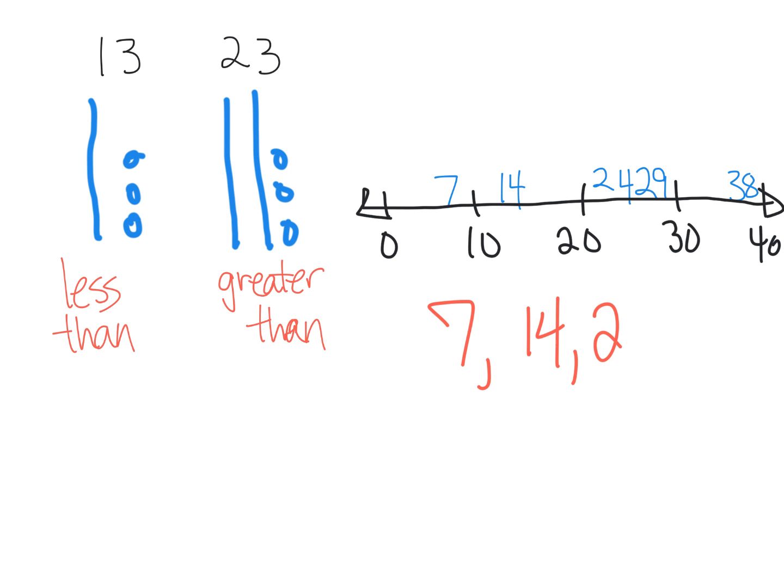But it's less than 29 because 29 is 2 tens and 9 more, so I'll kind of squeeze in 24 right here. Now we've just identified the numbers in order from least to greatest because we want students to recognize that when we place our numbers on a number line, that automatically tells us the order from least to greatest or from greatest to least.